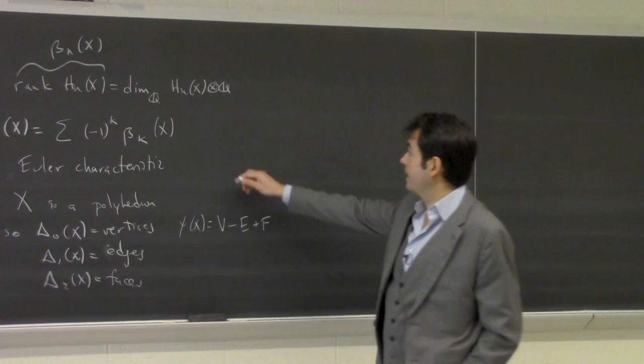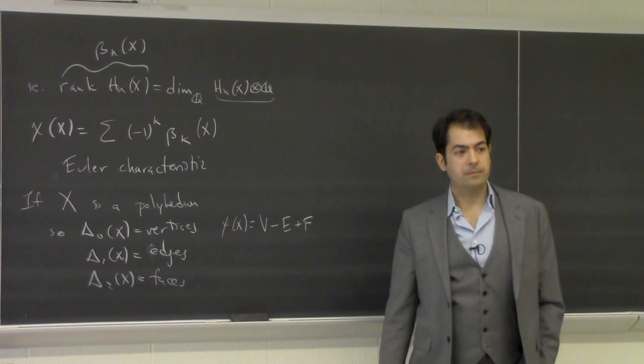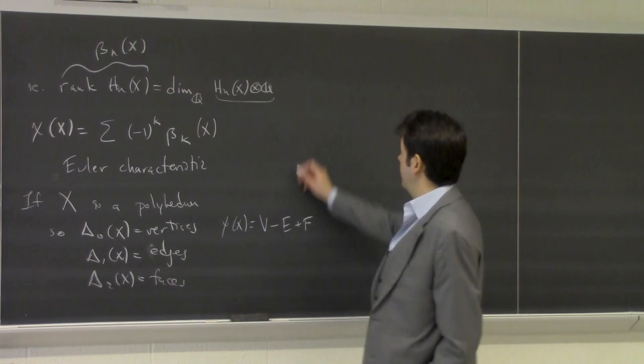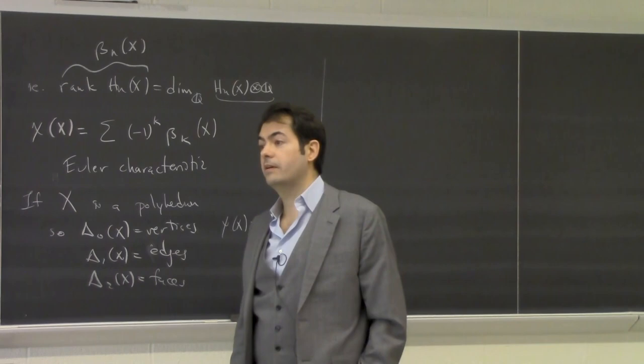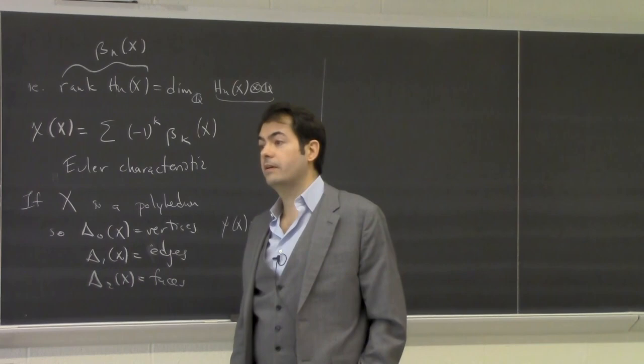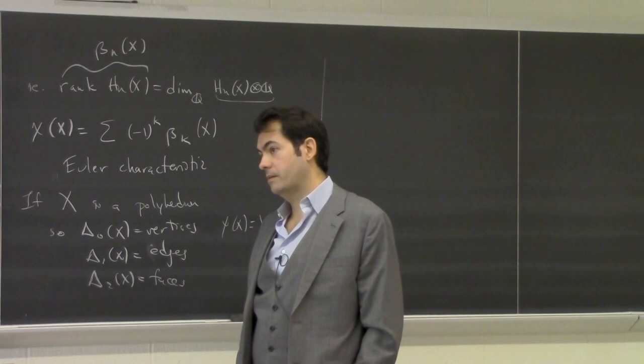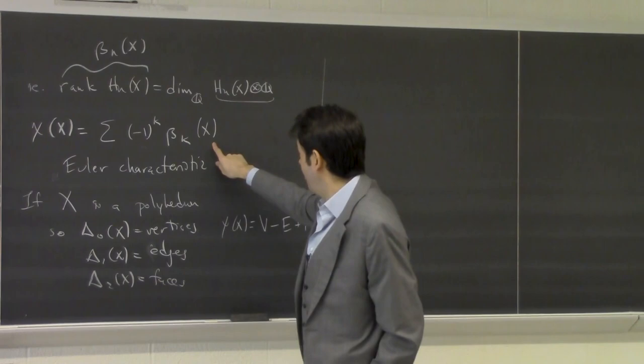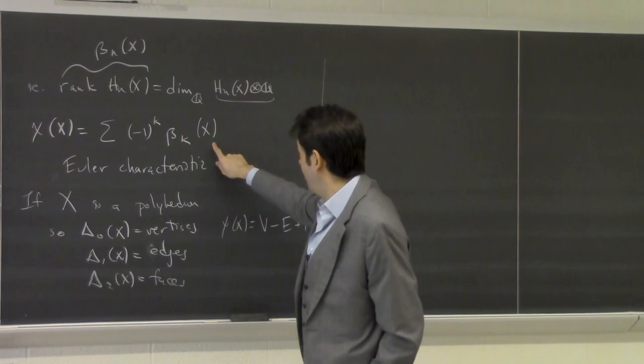A student asks about the vector space dimension over Q. This is a vector space over the rationals, and we mean its dimension. Another student asks for the Euler characteristic to be well-defined, confirming it requires finitely many non-trivial homology groups that are also finitely generated. A third student asks what the rank of H_n(X) means: since it's a finitely generated abelian group, we can write it as Z^k times finite cyclic groups; the rank is k, the number of copies of Z. The finite cyclic groups are called torsion coefficients, and they are also homotopy invariants.